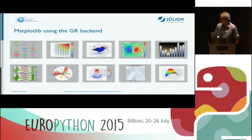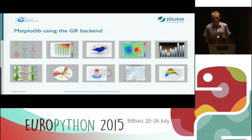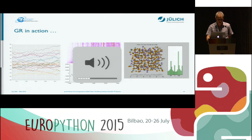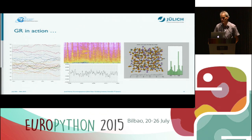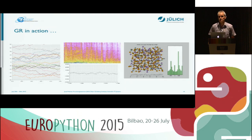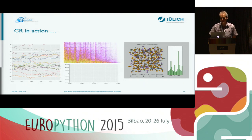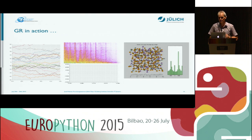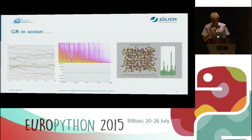This is the output of the Matplotlib GR backend. You can see there's no difference from the original output — the only advantage is that it's a little bit faster. Here you can see the GR framework in action: you can produce very fast output. For example, you can take an audio signal, calculate the Fourier transform, and display it in real time. You can visualize a molecule sequence while on the right side creating a histogram with Matplotlib — they can be combined in one plot without changing any line of code in your Matplotlib examples.